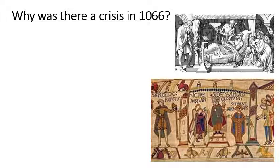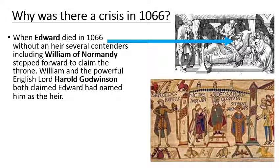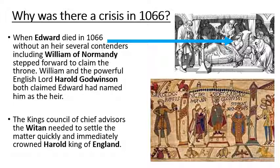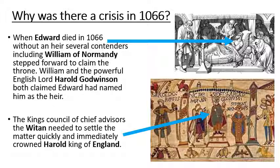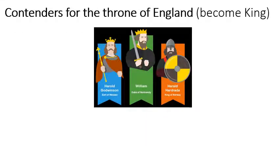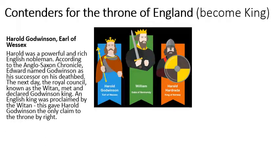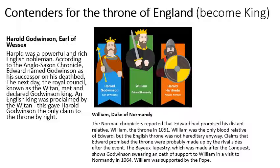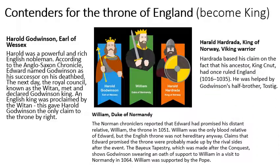But why was there a crisis in 1066? Edward the Confessor died without an heir, and several people believed they should become king. The leading nobles in England, the Witan, decided that Harold Godwinson should become king. However, the situation was not clear as there were several contenders for the throne: Harold Godwinson, a powerful English noble who believed Edward had promised him the throne; William, Duke of Normandy, who also believed Edward had promised him the throne and that Harold had sworn an oath to support him; and Harold Hardrada, the powerful Viking king of Norway, who believed that through his ancestor King Canute, who had once ruled England, he should become king.